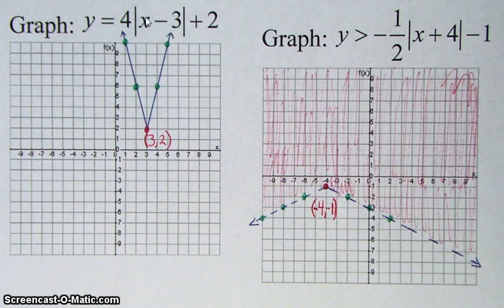Well, what you do, you take what's inside here, this is your x value, but it's the opposite of what's inside the absolute value. So the opposite of negative 3 is positive 3, comma 2.